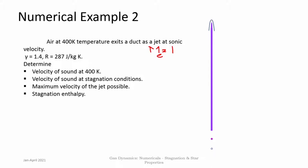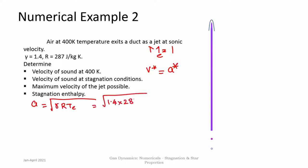Since the exit is at sonic conditions, V* = a* — velocity equals the speed of sound. The velocity of sound at the exit is a* = √(γRT*) = √(1.4 × 287 × 400) = 400.89 m/s. This is also the jet exit velocity at the sonic condition.